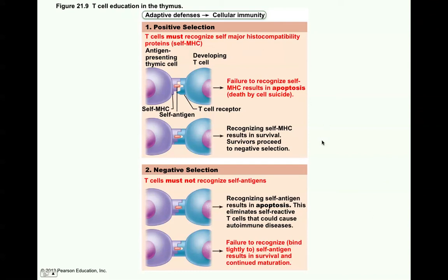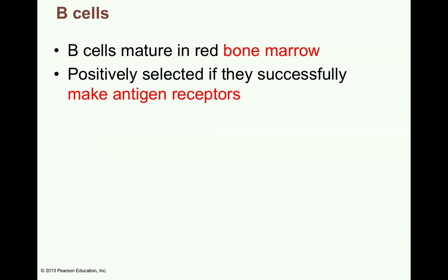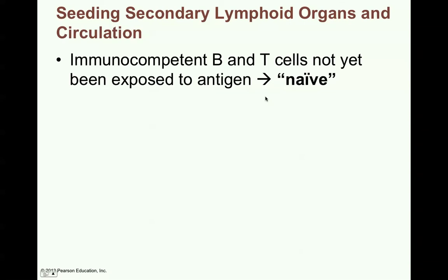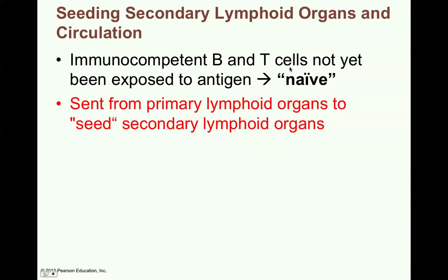This is highly summarized — there are many details in the middle. T cells first have to be able to recognize self MHC proteins, and then they need to only recognize antigens that are not self. B cells mature in the red bone marrow. They are positively selected if they can successfully make antigen receptors. Immunocompetent or mature B and T cells that haven't yet been exposed to an antigen are considered naive. They're sent from the primary lymphoid organs to seed secondary lymphoid organs.